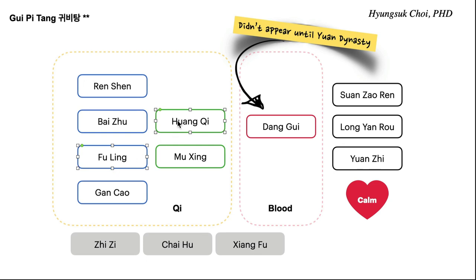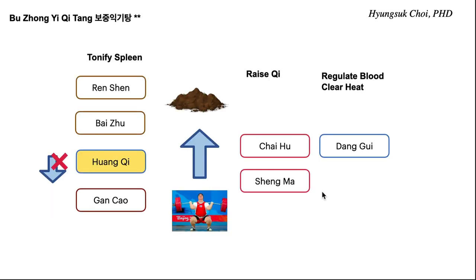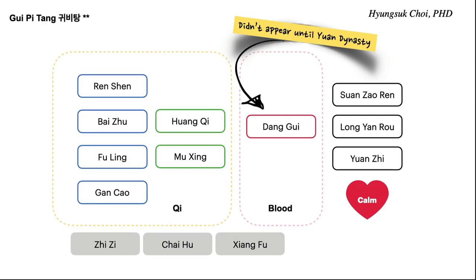Fuling and Hwangchi remove dampness, and Hwangchi augments qi. Mushing is here, just like Chen Pi in Bujongichitang. Also in the formula are Sanchaoren, Longanro, and Yuanchi.